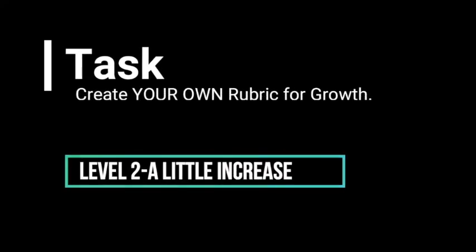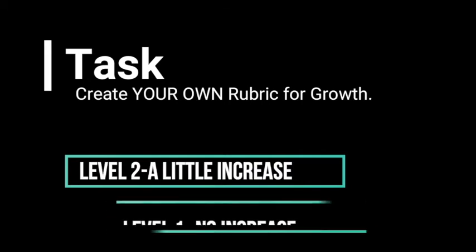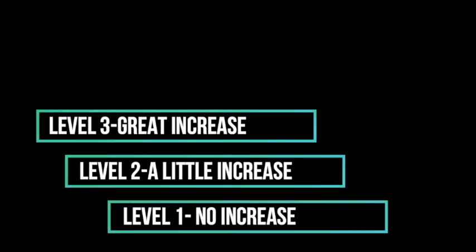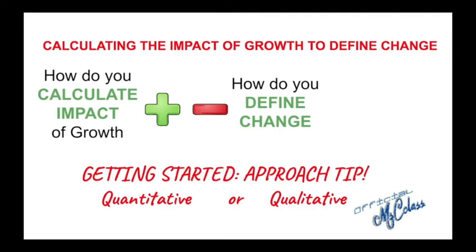Here's your first task: please write your own definition of change. What is your definition for change? Everyone says things change, but what does that mean? Change for good? Change for bad? Change for the better? I want you to think of your definition of change and write it down. Your next task: please create your own rubric for growth. It may be three levels — great increase, little increase, no increase. It's just to give you a rubric to support your methodological approach, which is really just saying the way you're going to calculate impact and define change, using quantitative or qualitative data.